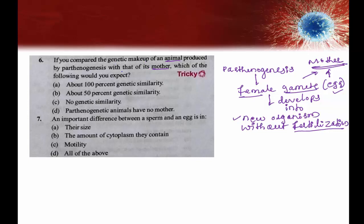With reference to genetic constitution, the options are: about 100% genetic similarity, about 50% genetic similarity, no genetic similarity, or parthenogenetic animals have no mother. The 50% similarity option would apply if the female gamete fused with the male gamete during fertilization. But in parthenogenesis, fertilization is completely absent. Therefore, the only correct option is option A: 100% genetic similarity.